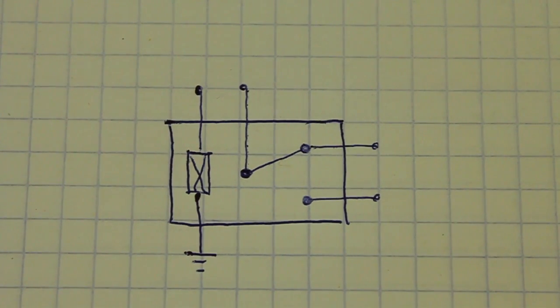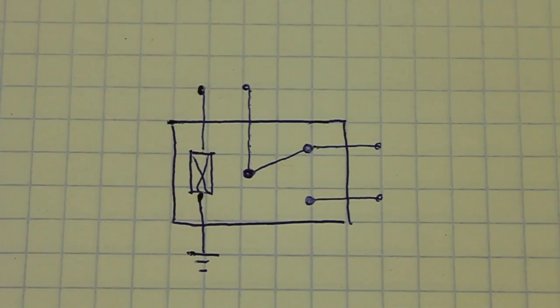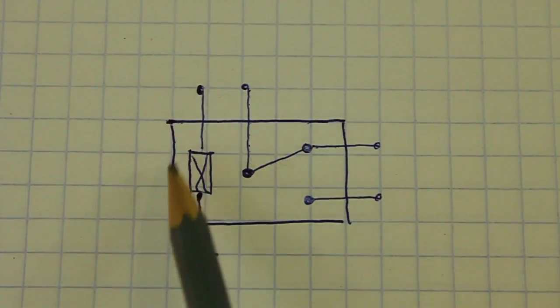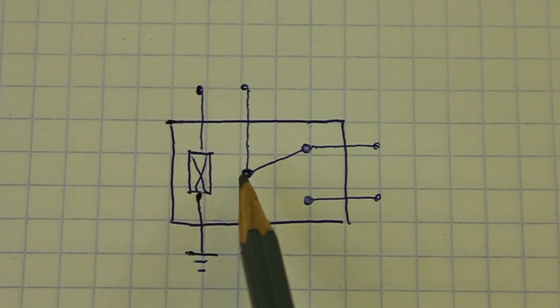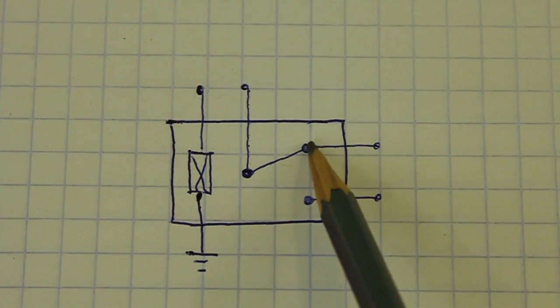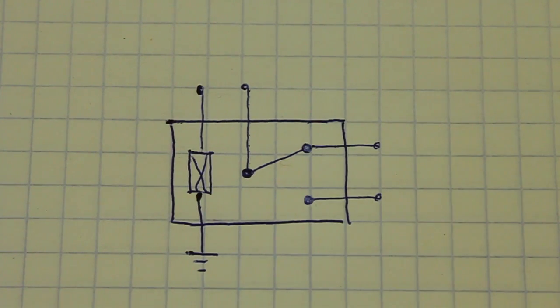This is how I will be drawing the relays in the schematics. Here we have the coil, the common contact, the normally closed contact and the normally open contact.